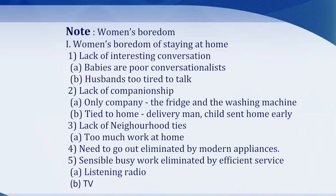If we are asked to make a note from the above passage, the following worked-out example will help us understand it better. The title of the note will be 'Women's Boredom.' Under Roman I: Women's boredom of staying at home. Under point 1: Lack of interesting conversation — (a) Babies are poor conversationalists; (b) Husbands too tired to talk. Under point 2: Lack of companionship — (a) Only company: the fridge and the washing machine; (b) Tied to home — delivery man, child sent home early. Under point 3: Lack of neighborhood ties — subheading: too much work at home. Under point 4: Need to go out eliminated by modern appliances. Under point 5: Sensible busy work eliminated by efficient service — subheading: listening to radio and television.